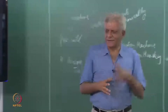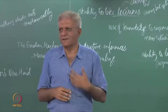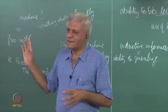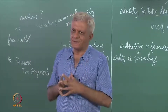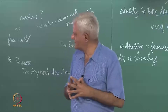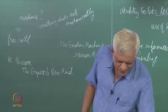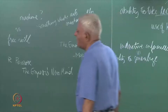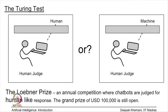It is very difficult to make predictions in these matters. David Levy said no machine could beat him at chess; Turing predicted machines would routinely pass the Turing test. Both were wrong in a sense — we still cannot say we have machines that reliably pass the Turing test. Currently, there is something called the Loebner Prize, instituted by a man called Loebner. It is an annual competition where chatbots are judged for human-like response, and there is a grand prize of 100 thousand dollars — still open.